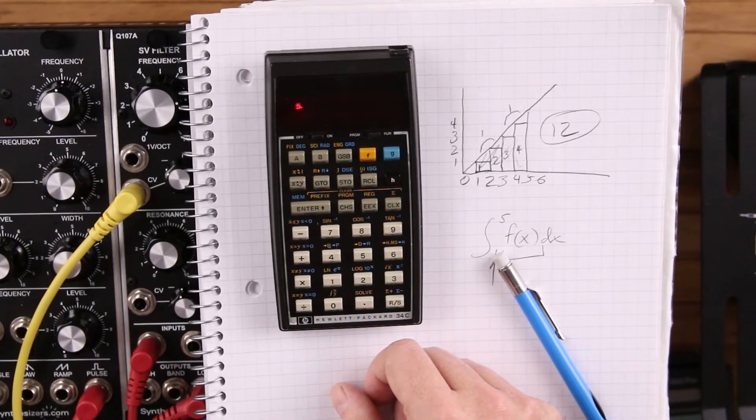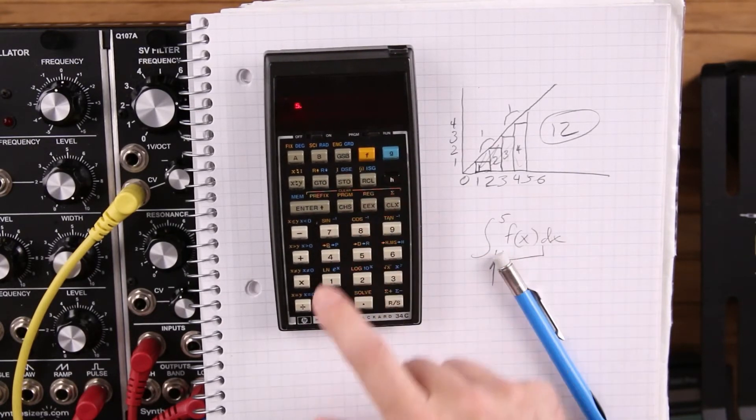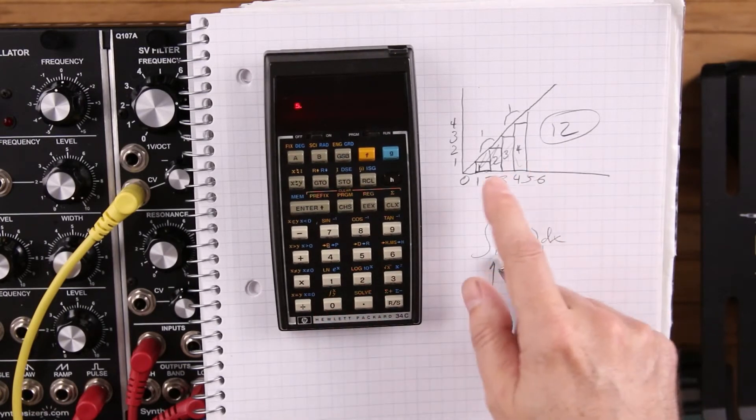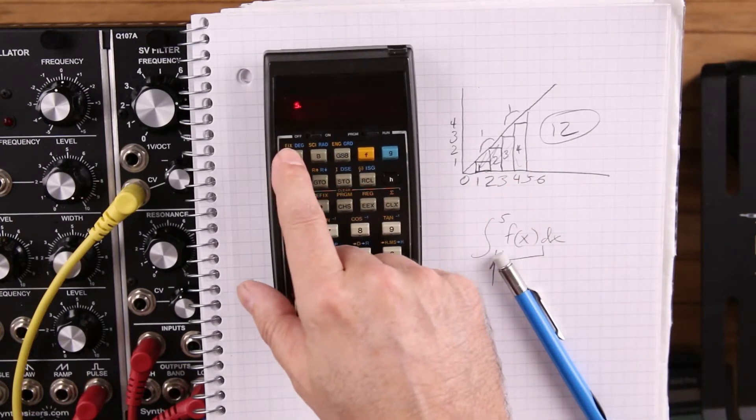And then we're going to do the integration function, and we're going to select this function, which is label A.